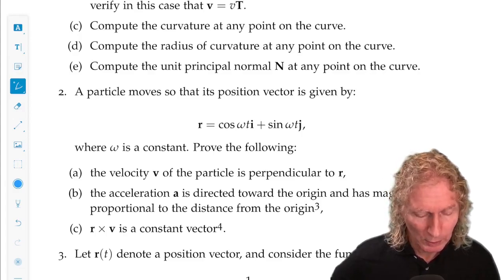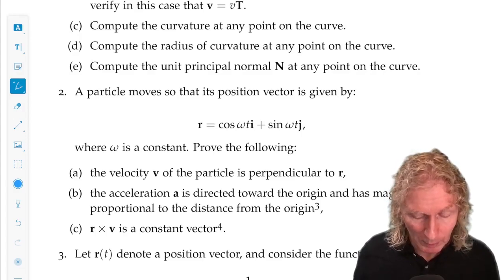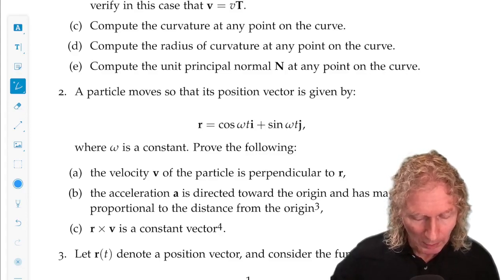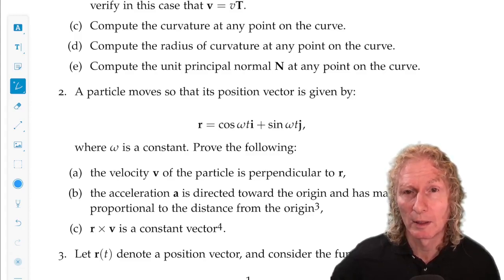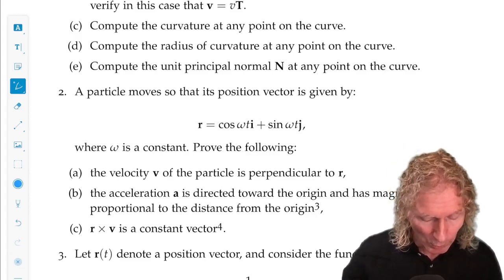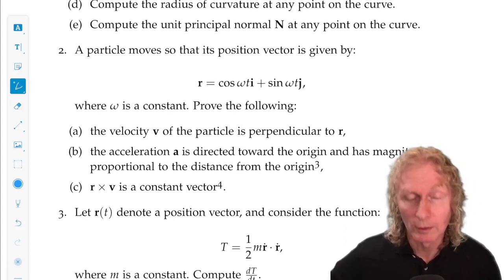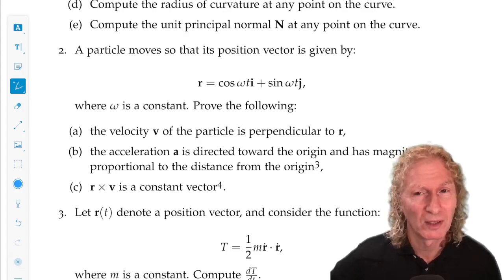Now, question 2. Particle moves in the plane. So its position vector is given by R is cosine omega t i plus sine omega t j. Omega is constant. I want you to prove that the velocity of the particle is perpendicular to R. Sounds like a dot product.